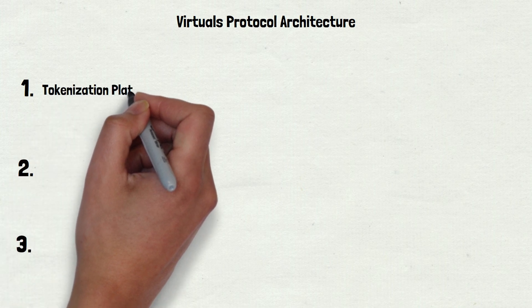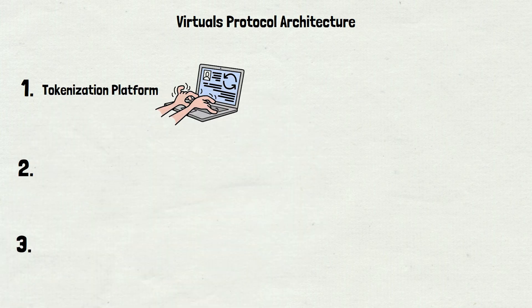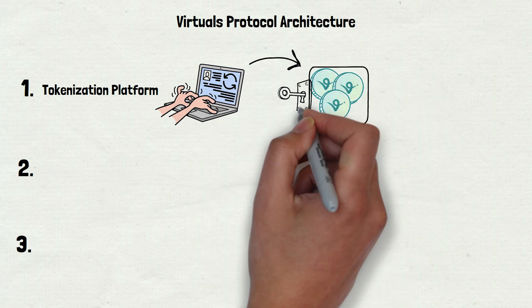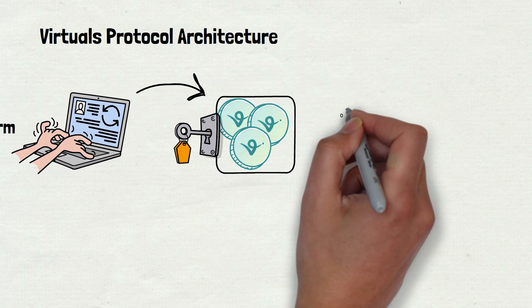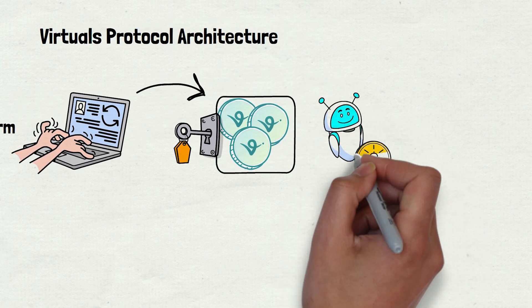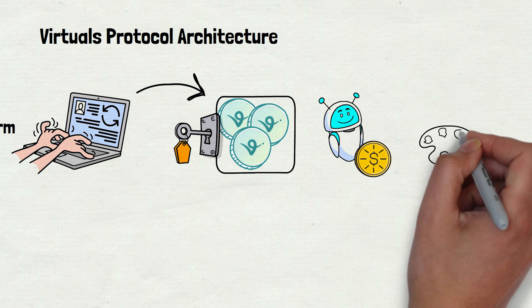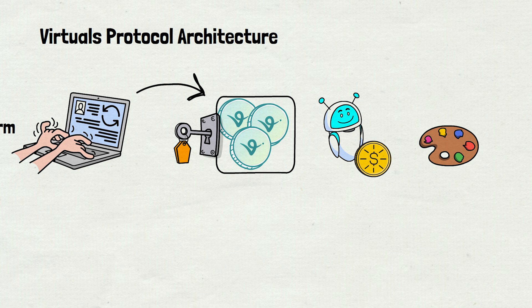VIRTUALS protocol has 3 main parts that work together. First, there is the tokenization platform. This is where creators launch their AI agents. To start one, they lock up some VIRTUAL tokens. These tokens create a trading pool for the agent's own token, so people can buy and sell it easily. Imagine an AI agent that makes digital art. Its token is like a ticket showing its value, and as it sells more art, that value can grow.